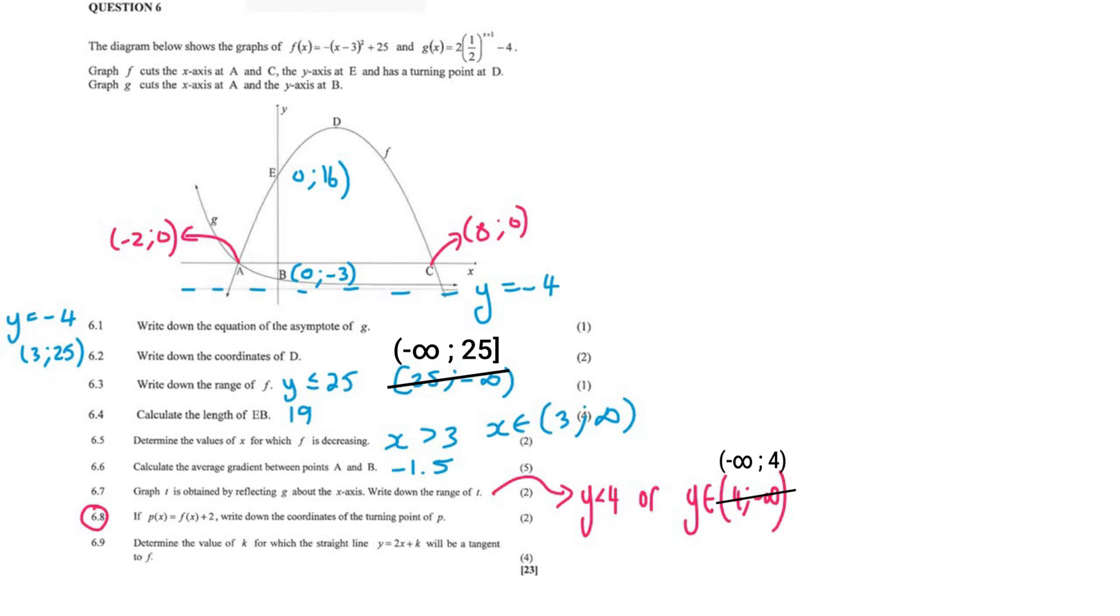Question 6.8. If p equals f plus 2, write down the coordinates of the turning point. This is quite an easy one. They're saying that p is the same as f, but then they want you to plus 2. So this will move the graph up. The turning point of d is currently 3 and 25. Now it's just going to become 3 and 27.